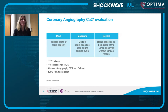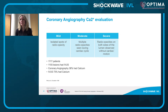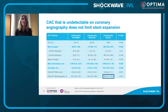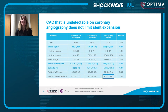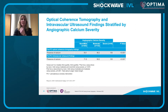When evaluating the coronary angio, the finding of isolated spots is defined as mild coronary calcification. If you can see multiple opacities through the cardiac cycle, the calcium burden is moderate, and with calcium on both sides of the lumen visible without cardiac motion, the disease is severe. Angiographically, the calcium gets more severe as appreciated on OCT by increased arc, thickness, and length of calcium. Only when you angiographically see severe calcium does stent expansion become affected.